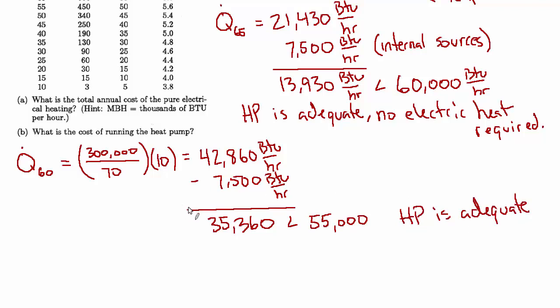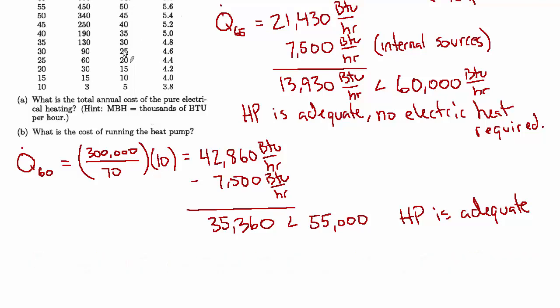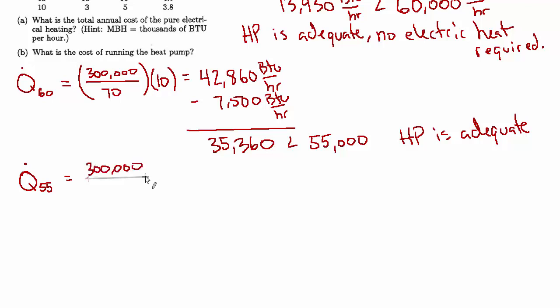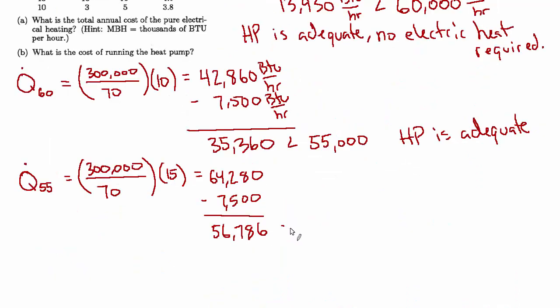Let's do that for the next row as well and see if we need the electric heat. So we'll call this one q_60. Still 300,000 over 70, but now our delta t will be 70 minus 60 instead. So that's only a delta t of 10. And that equals 42,860 BTUs per hour. Again, we subtract the internal load. And the result is 35,360. And the capacity is less than it was before. Now the capacity is only 55 MBH. But that's still more than we need. So the heat pump is still adequate.